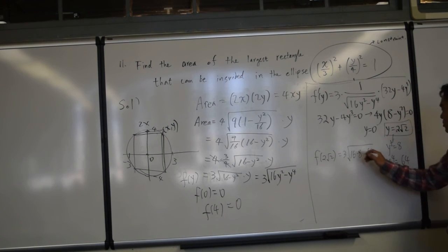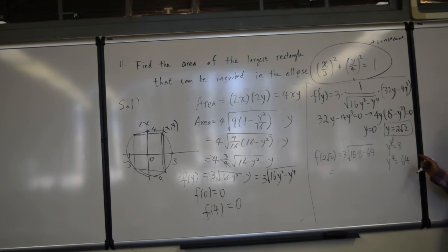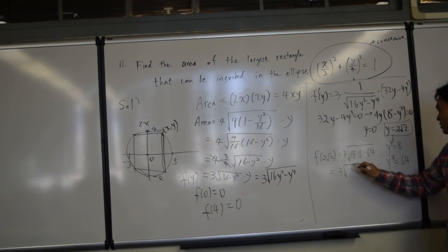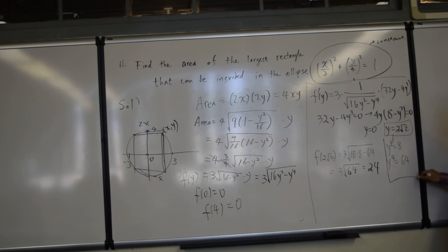Yeah, I knew something was strange when I did it last time. It's much better. Okay, so we have, let's see, this is 128 minus 64. That's, again, 64, so 24. So that's the correct answer.